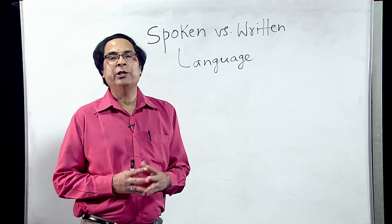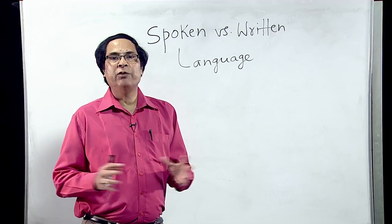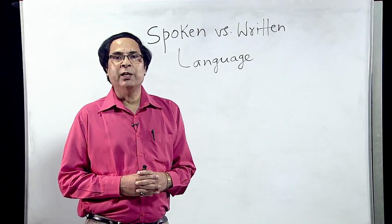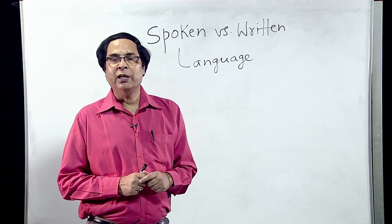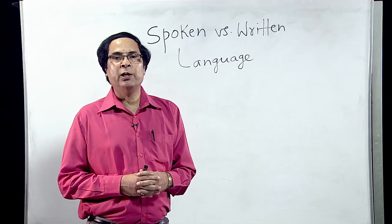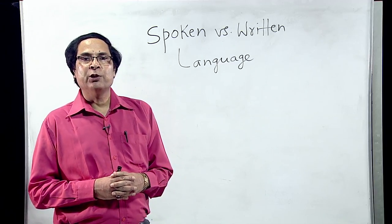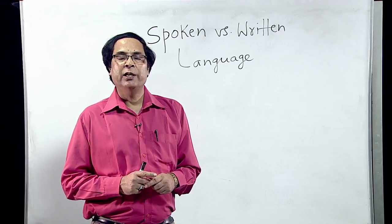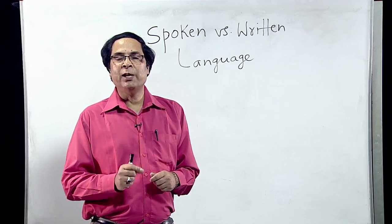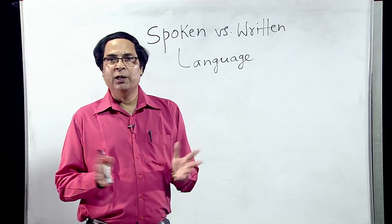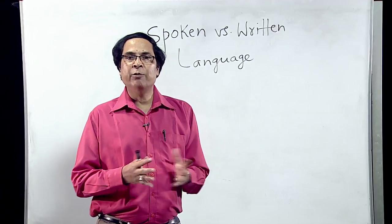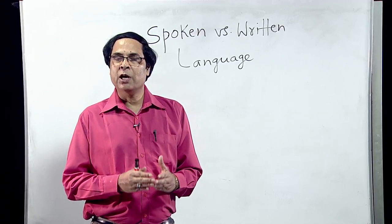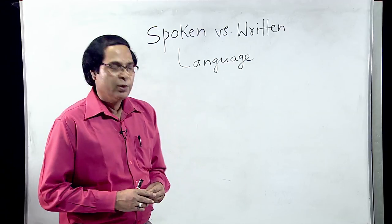Every language that is written uses a finite set of letters. If they are alphabetic, they use letters of the alphabet. There are also logographic languages, where each symbol represents one morpheme or word — for example, Chinese. Some languages are syllabic, where a consonant and a vowel are written together, as in Japanese. Indian languages are mostly alphabetic and some are syllabic, using combinations like kha, ga — always a consonant combined with a vowel.